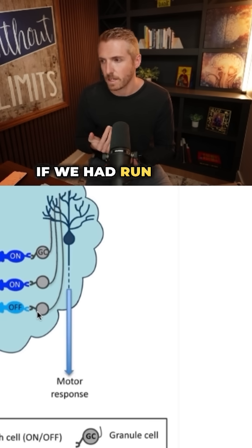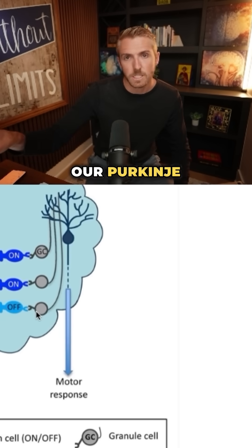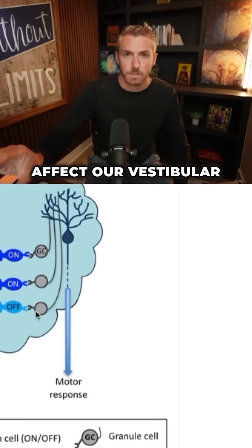Those could all cause lack of development in our vestibular system. I want you to remember that if we run a neural zoomer and we have autoimmunity against our Purkinje cells, that's going to affect our vestibular system.